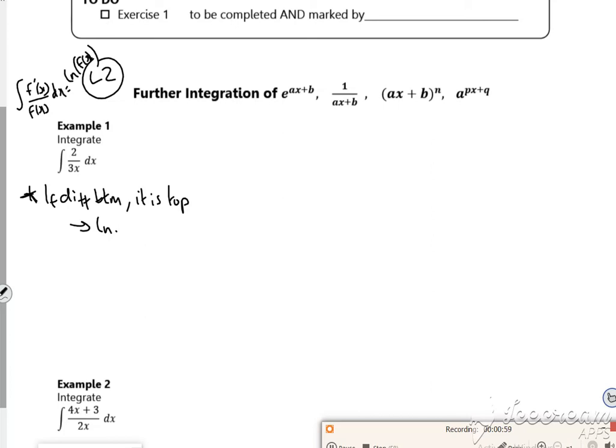So if I differentiate the bottom, it's at the top. The way I do it, I say, well, what have you got? So I've got a 2. What do you want? Well, if I differentiate the 3x, what I want is a 3, and then it's log of whatever was on the bottom. There. Log of 3x plus c.